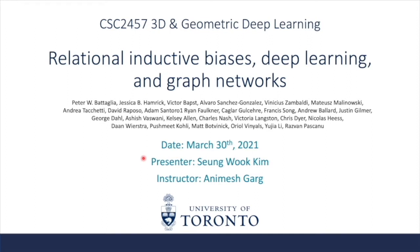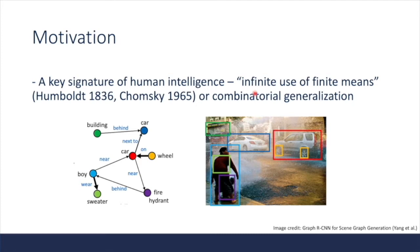Hi, I am presenting 'Relational Inductive Biases, Deep Learning, and Graph Networks.' This paper is written by a lot of people, mostly from DeepMind. One of the key signatures of human intelligence can be characterized by infinite use of finite means, or combinatorial generalization.